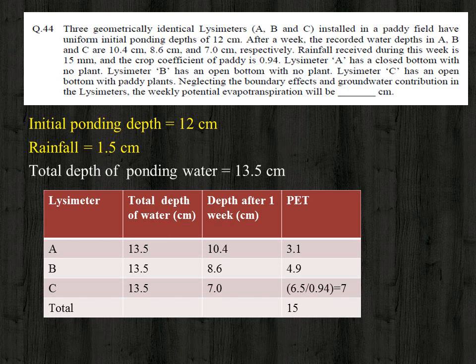For lysimeter A (closed bottom, no plants), since there is no groundwater contribution and no boundary effects, all water lost is due to evaporation only. So potential ET from lysimeter A = 13.5 − 10.4 = 3.1 centimeter.